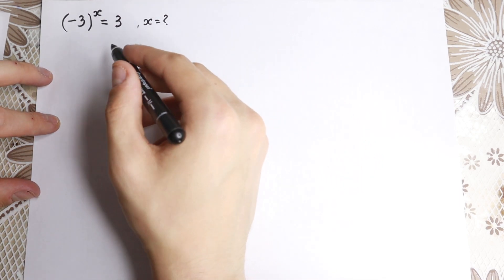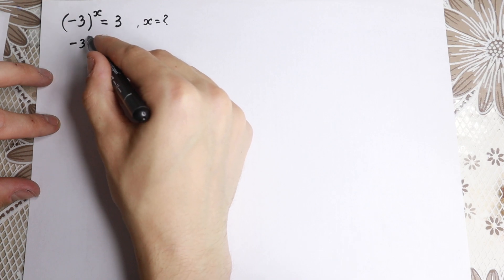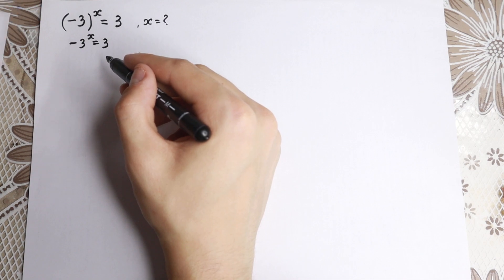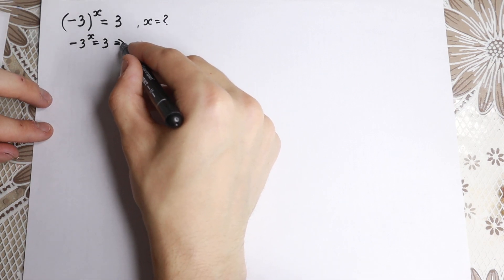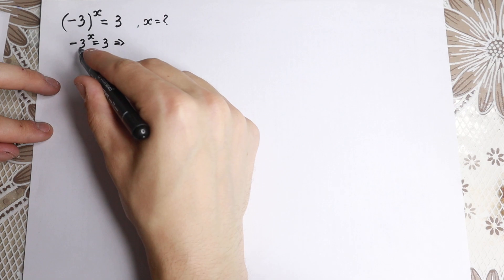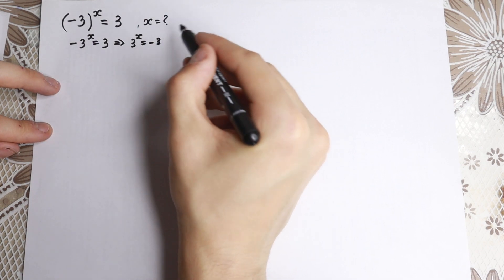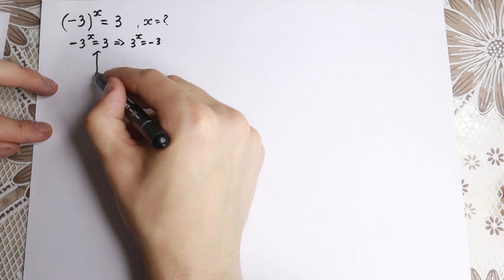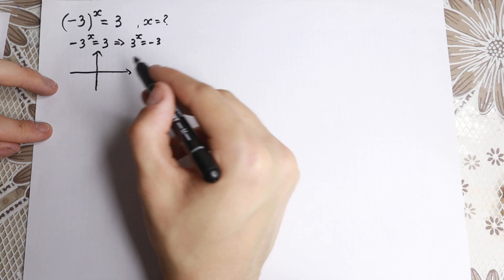First, if we don't have parentheses — like minus 3 to the x equals 3 without parentheses — let's try to solve it. I want to show you one trick. So if we don't have parentheses, multiplying by minus 1 gives us 3 to the power x equals minus 3. If we have this expression, 3 to the x equals minus 3, we can easily use the graph method.